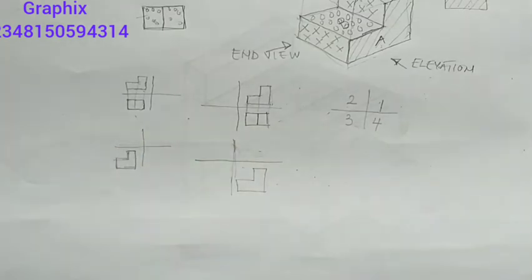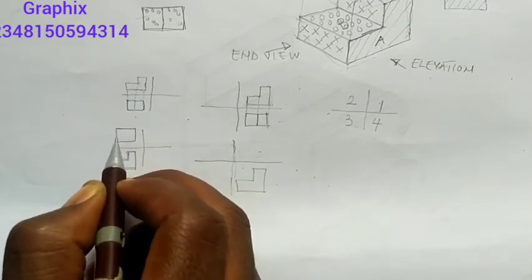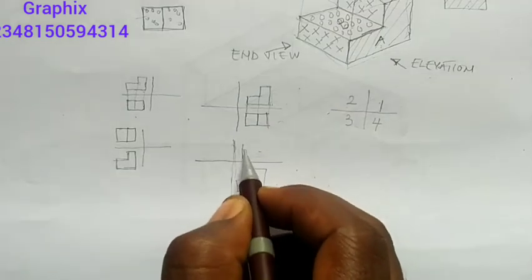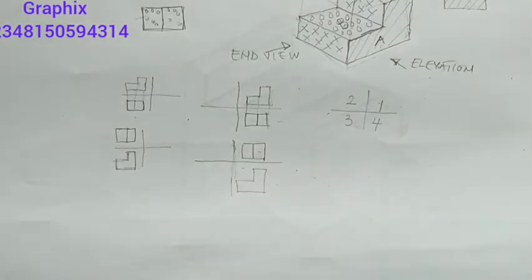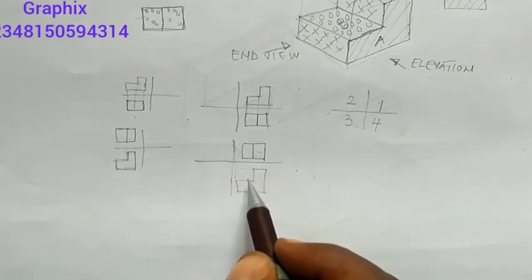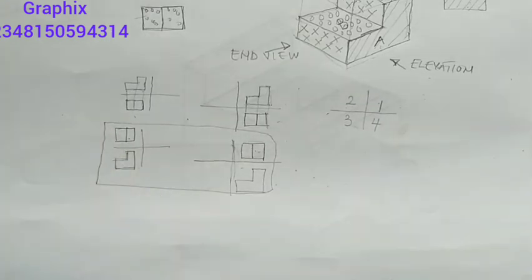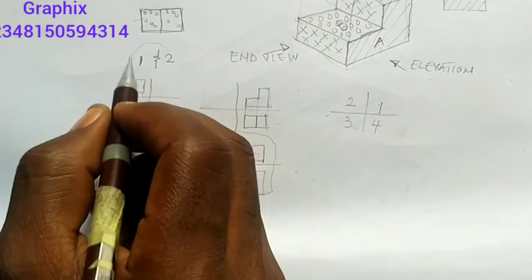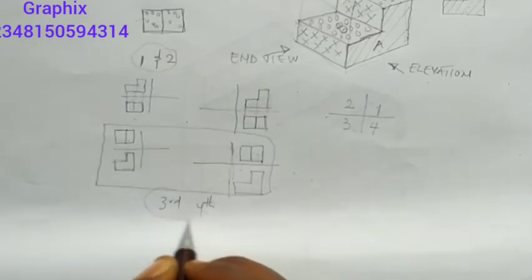But if I now have my plan on top of the elevation, that's third angle projection. So the plan is always on top of the elevation in third angle projection. First angle and second angle are classified together as one group, while third angle and fourth angle are classified together as one group.